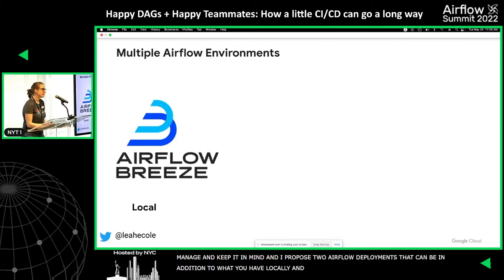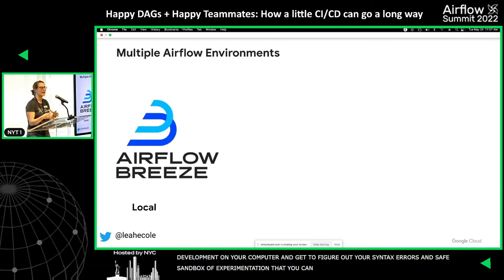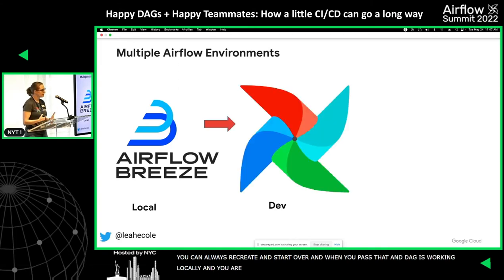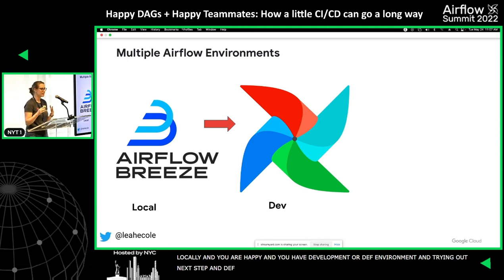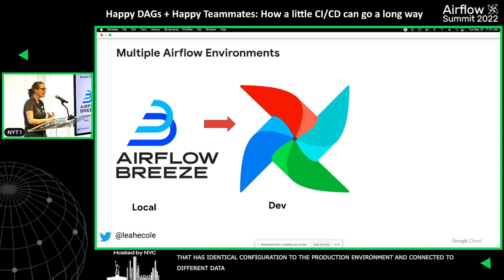You have your local development environment, using something like Airflow Breeze or something similar. You do all your DAG development on your computer, figure out syntax errors — this is your safe sandbox of experimentation which you can break as much or as often as you need to. Once your DAG is working locally, you have your development environment. The dev environment should be as close to your production environment as possible without connecting to your production data sources — identical configuration, identical permissions, same versions of Python packages, and most importantly the same version of Airflow.